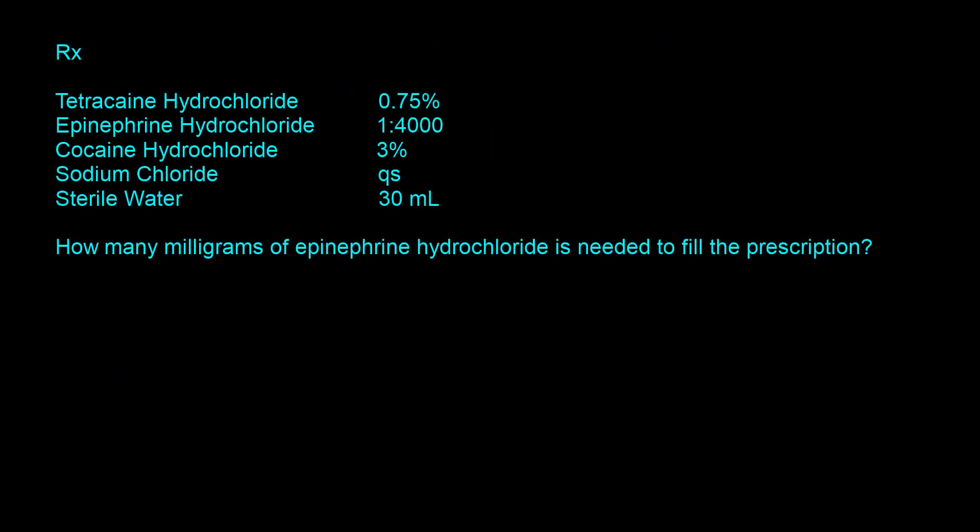Now let's look at another question. Here you have a prescription containing tetracaine hydrochloride 0.75 percent, epinephrine hydrochloride 1 is to 4000, cocaine hydrochloride 3 percent, sodium chloride, with a total preparation of 30 milliliters. The question asks: how many milligrams of epinephrine hydrochloride is needed to fill the prescription? Our goal is to calculate the amount in milligrams of epinephrine hydrochloride, given ratio strength 1 is to 4000 and volume 30 milliliters.